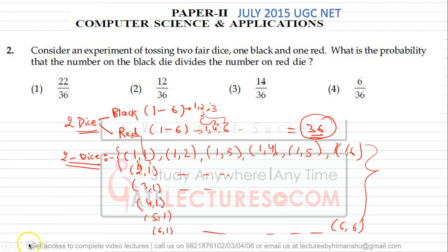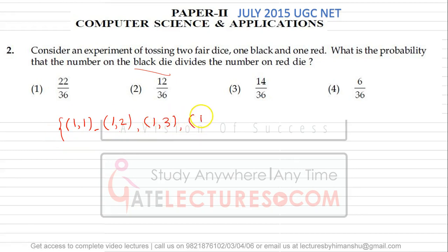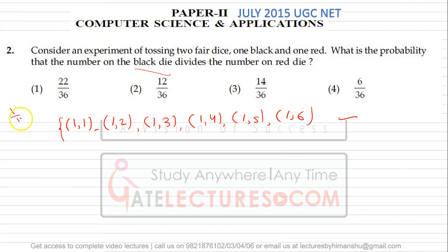Now we need to find the number of favorable ways such that the number on the black die divides the number on the red die. We can have: 1,1 — 1 divides 1; 1,2 — 1 divides 2; 1,3 — 1 divides 3; 1,4 — 1 divides 4; 1,5 — 1 divides 5; 1,6 — 1 divides 6. Since 1 divides everything, all six outcomes with 1 on the black die are favorable.